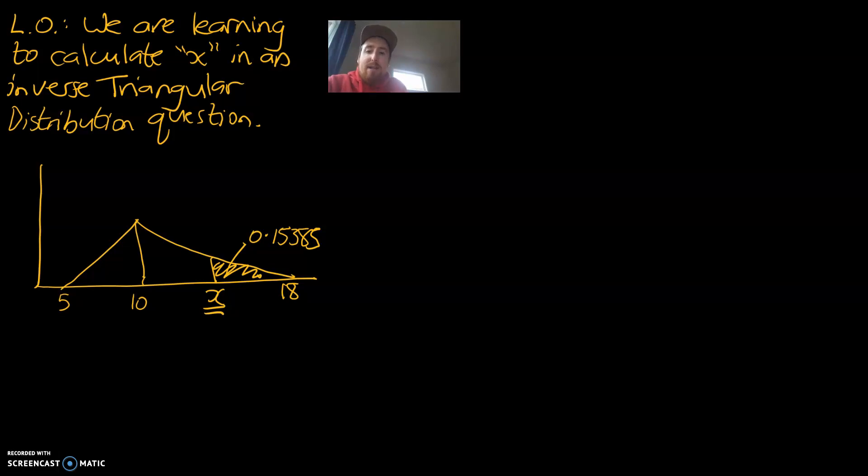Before we get in, let's write down our parameters so we know which relates to minimum, maximum, and peak. So, that minimum is always 5, that maximum is 18, which is b, and our peak is 10, leaving x the only thing that we don't know.